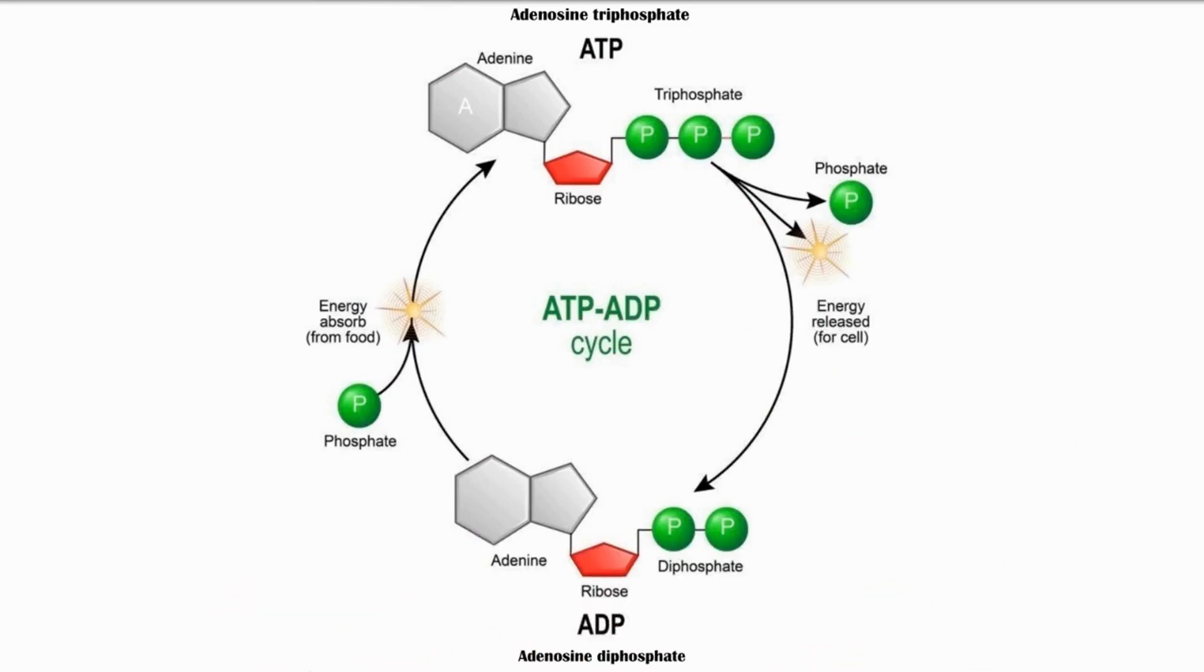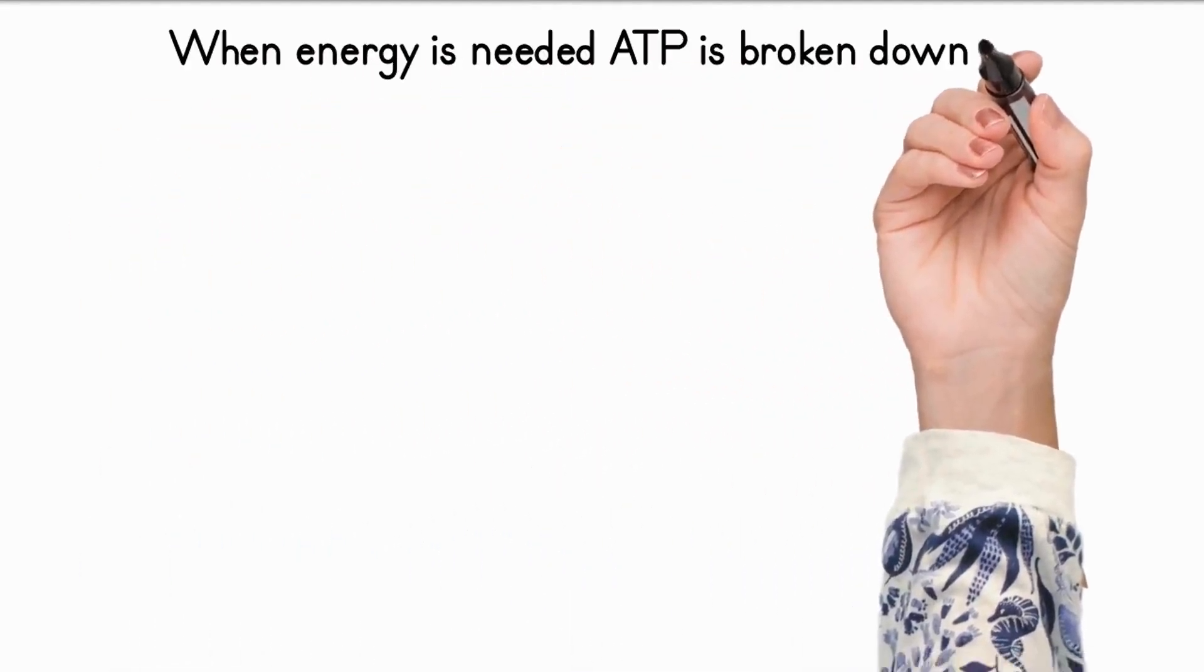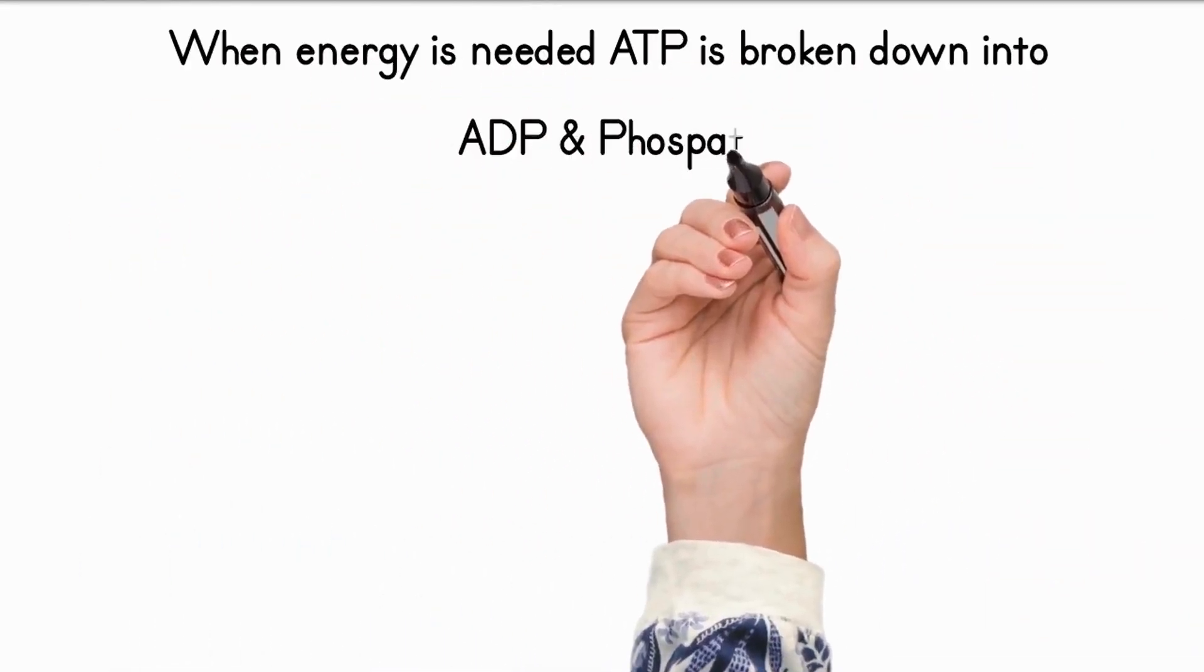In a cell, ATP can be broken down, losing one phosphate group and forming adenosine diphosphate, or ADP. When energy is needed, ATP is broken down into ADP and phosphate.